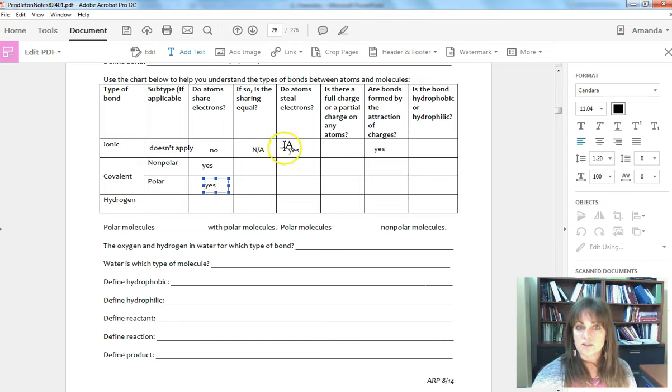Ionic means you've stolen them. So do they share electrons? Were it nonpolar? Yes. So is the sharing equal? Yes, it's equal. Each atom keeps those electrons around it an equal amount of time as the other.